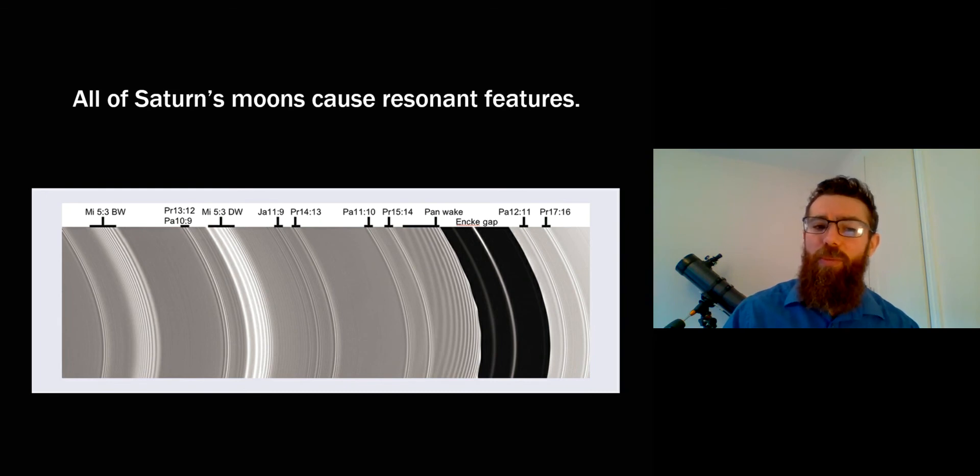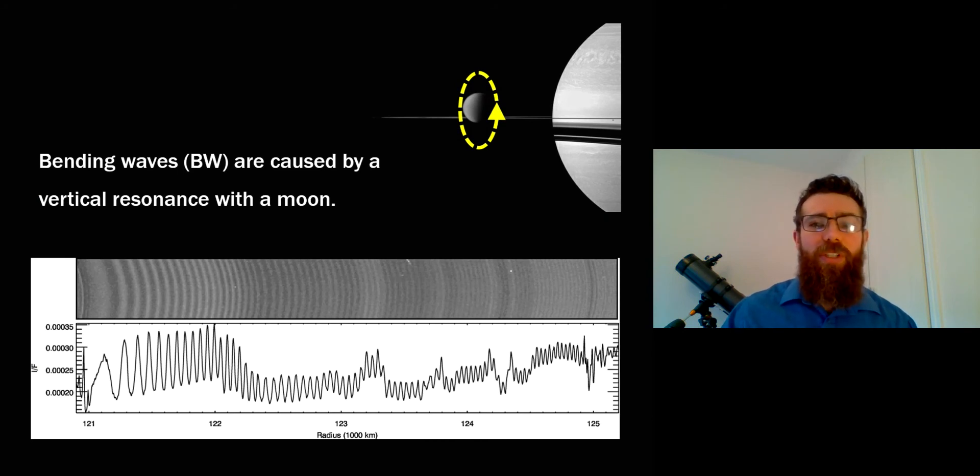You may notice that some have got a BW and a DW next to them. Well the BW stands for bending waves and this is slightly different to the DW which are the density waves and this is caused by the vertical movement of the moon. So the rings are quite flat and the moons are not on a perfectly aligned orbit so they're slightly inclined so they wander around up and down the ring and that causes this vertical movement of the ring and it causes a bit like a corrugation of the ring and it occurs at these resonant locations as well. This is like a vertical distortion in the ring caused by these resonances.